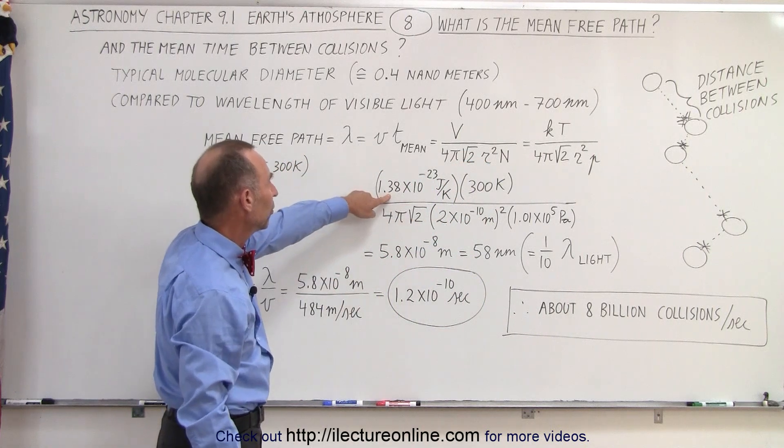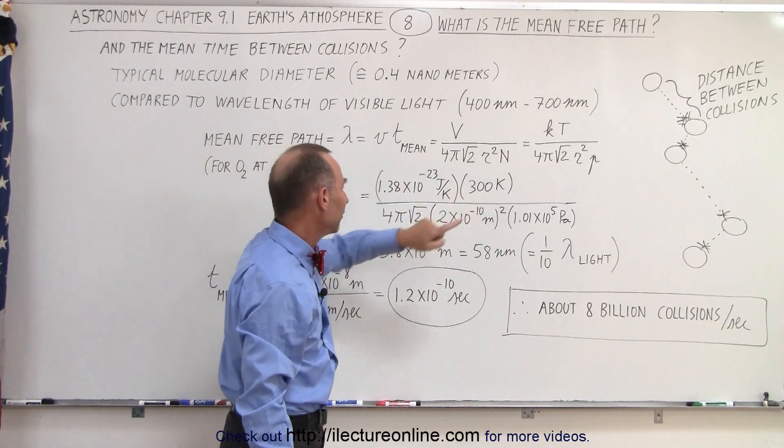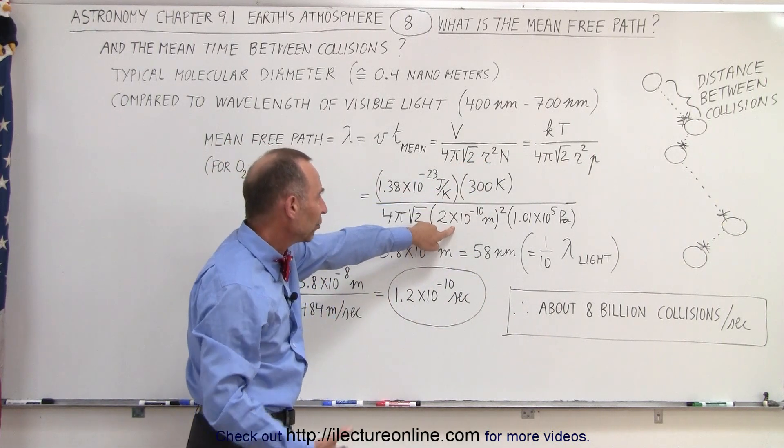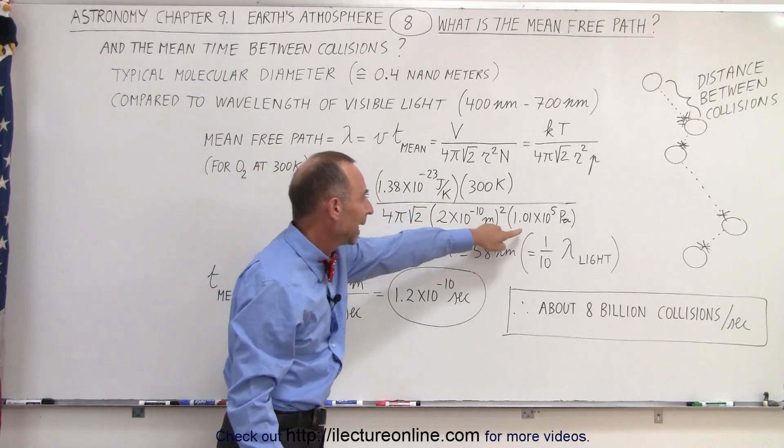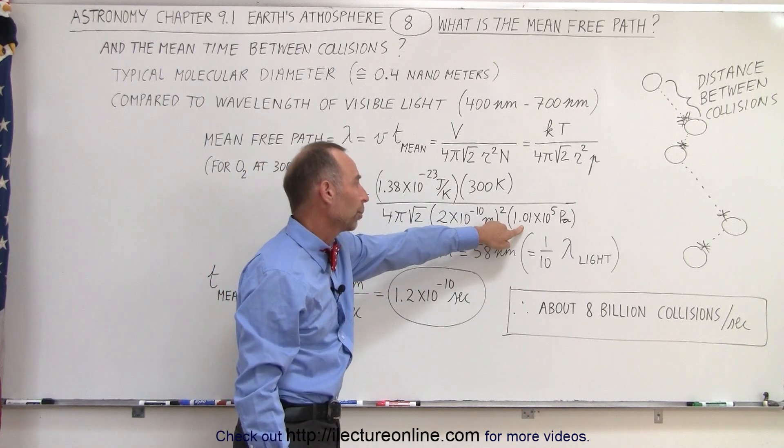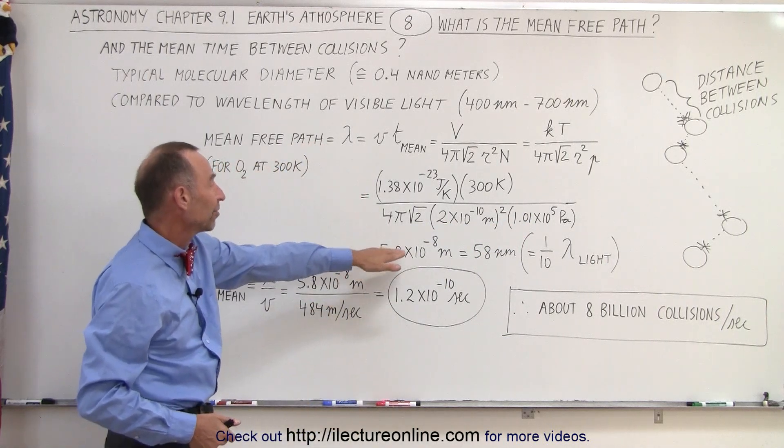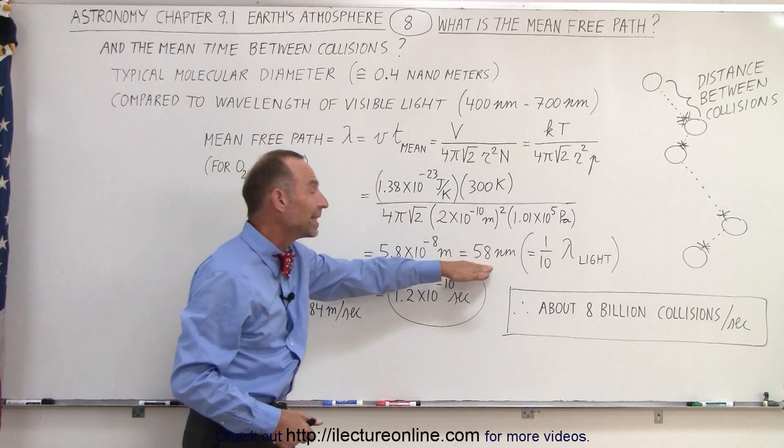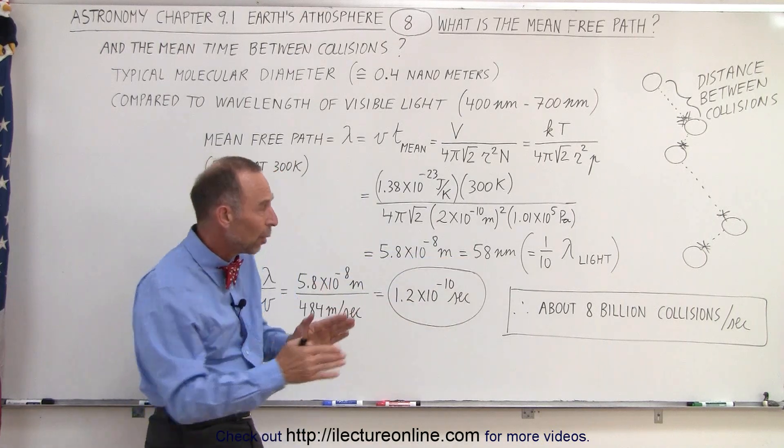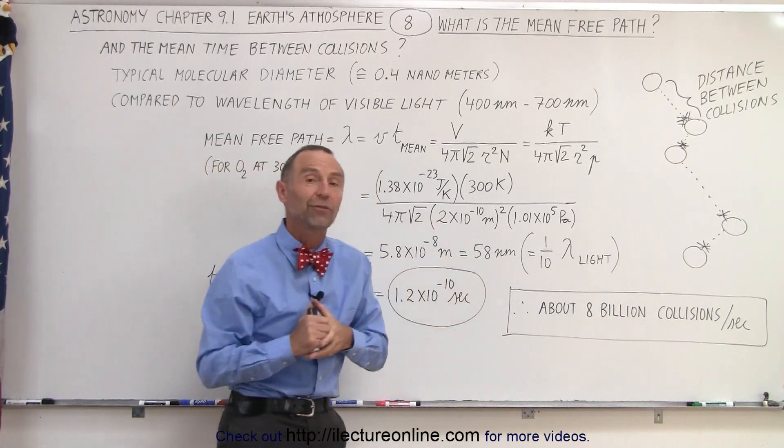So we put in the constant, the temperature in Kelvin, the radius of an oxygen molecule, and the pressure, 1 atmosphere, 1.01 times 10 to the fifth Pascal. When we calculate it out, we get 5.8 times 10 to the minus 8 meters, which is 58 nanometers.